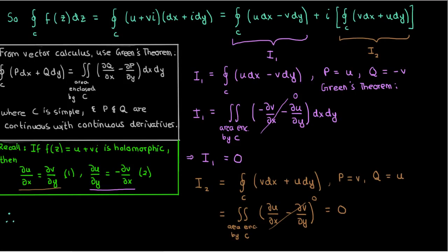Since I₁ is 0 and I₂ is 0, I₁ plus I₂ is 0, and it follows that the closed integral along c of f(z) dz is 0 plus 0i, which is just 0, and this proves Cauchy's theorem.